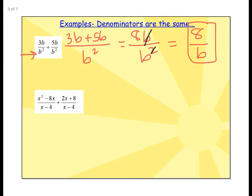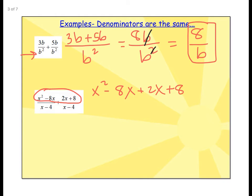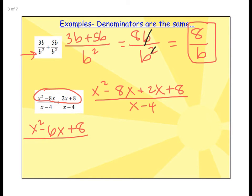For the next example, the denominator is the same — it's x minus 4. I take everything on top and add it together, showing the middle step. So I add minus 8x and then plus 2x plus 8, all over x minus 4. Combining like terms on top gives x squared minus 6x plus 8 all over x minus 4. Now we've taken care of the adding and subtracting, but I still need to ask if I can simplify.